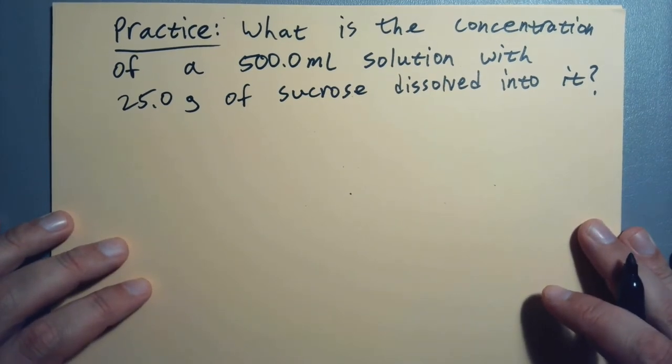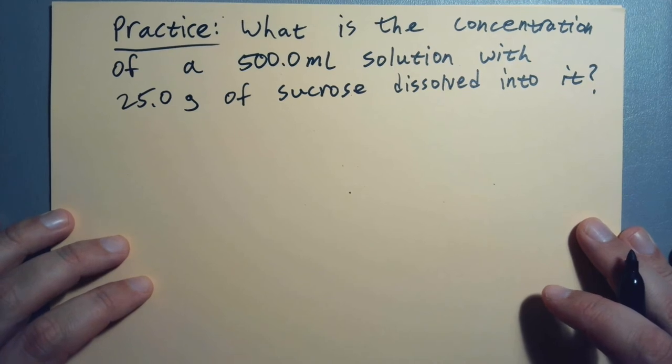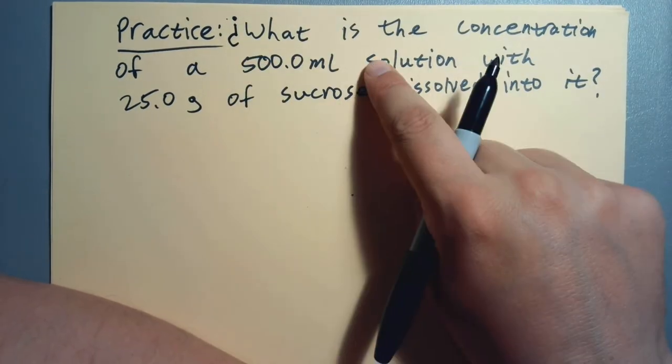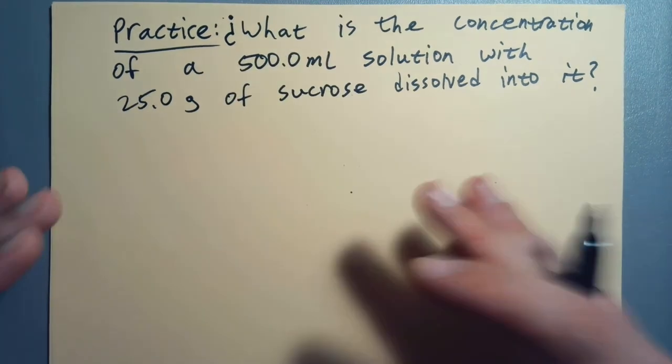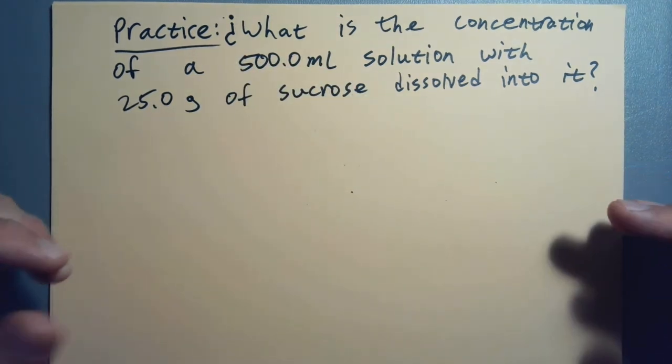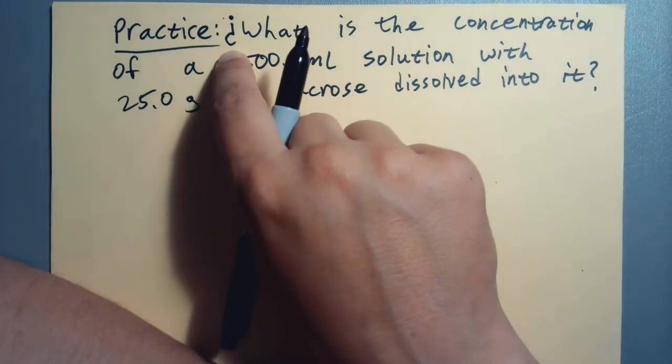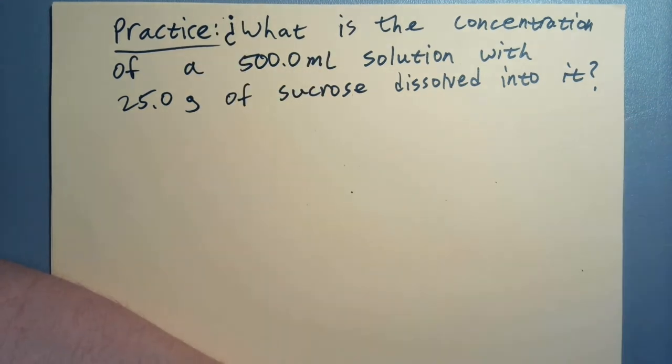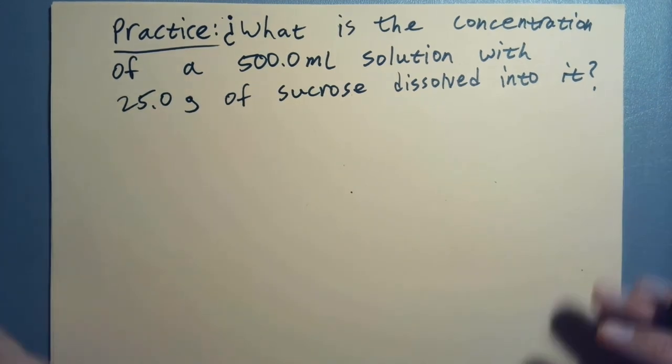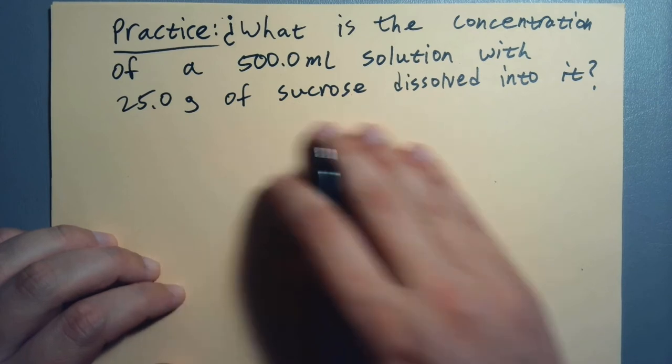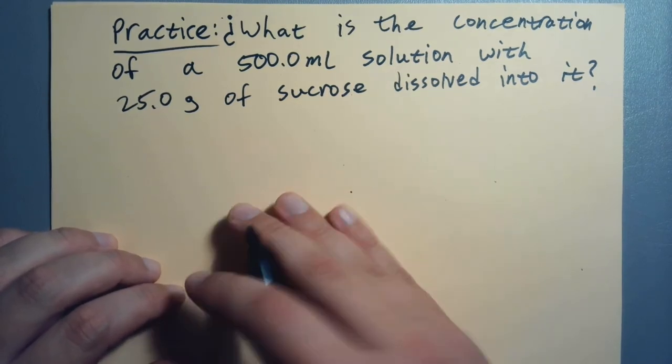It's not a proper question without a question mark at the end. So we have to do a calculation. There's numbers. What do we do? Well, our formula is just our mass of our solute divided by the volume of the solution times 100%.